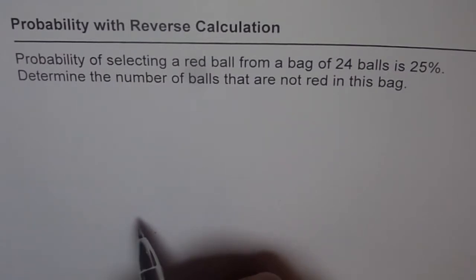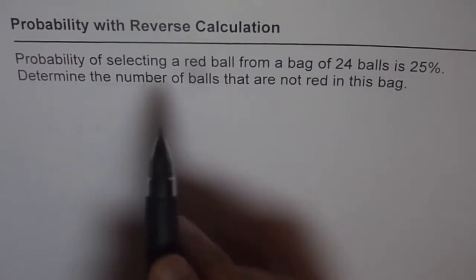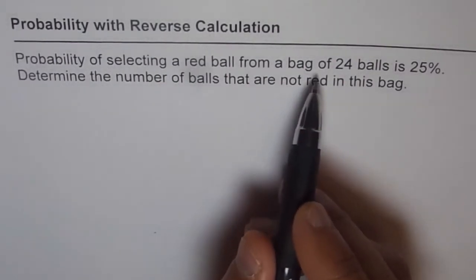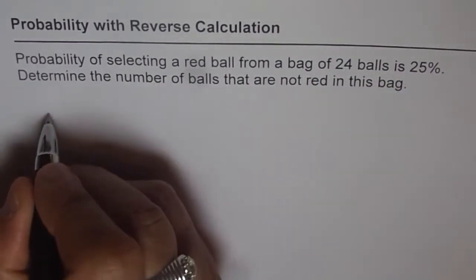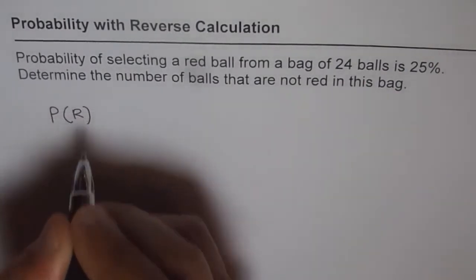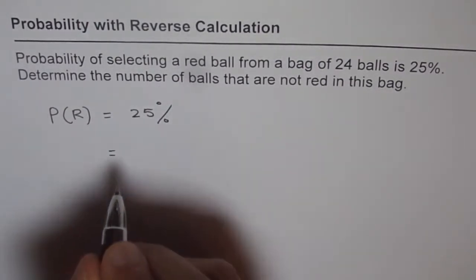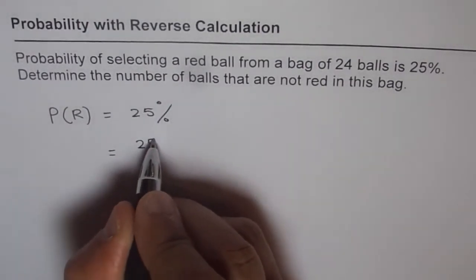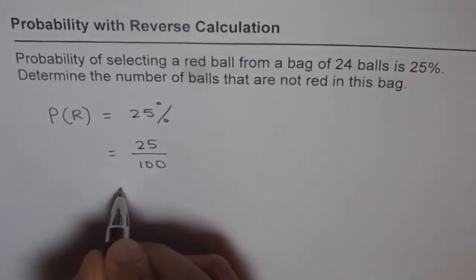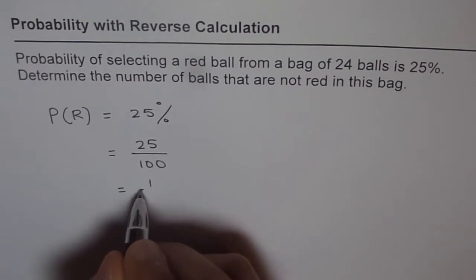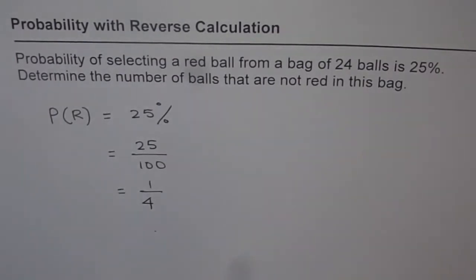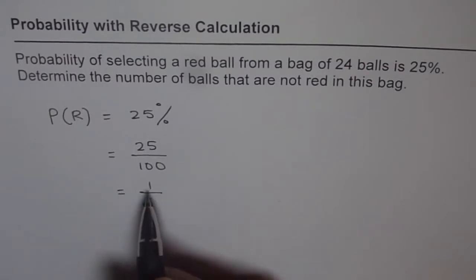When we say probability of selecting a red ball from a bag of 24 balls is 25 percent, we mean probability of red ball equals 25 percent. 25 percent really means 25 over 100, and 25 over 100 means one-fourth — there are four quarters in 100. So probability of getting a red ball from the bag is one-fourth.